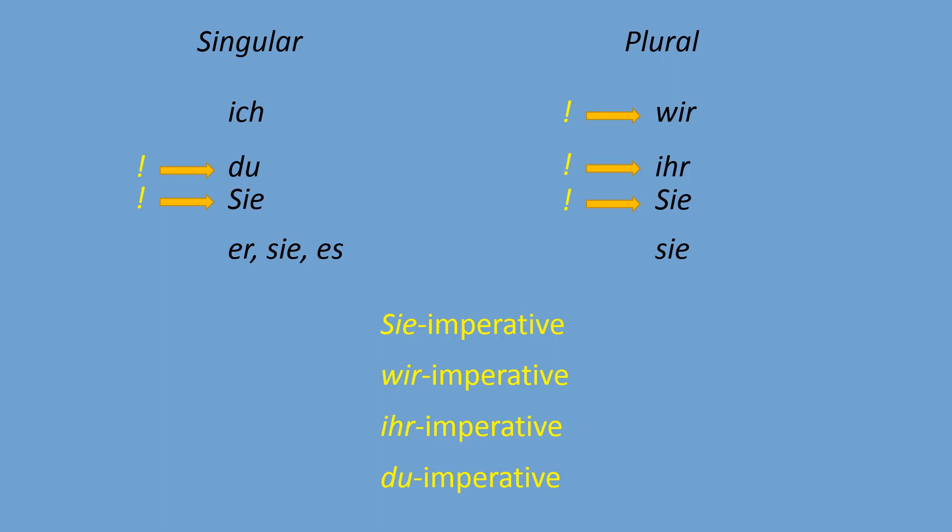What about third person singular and plural — 'er,' 'sie,' 'es,' or 'they'? If you're talking about your best friend Michael using 'he,' as soon as you turn to Michael and give him a command, you switch to the du-imperative. Similarly, if you turn to a group you were describing as 'they,' you'll use the ihr- or Sie-imperative. So it's impossible to give commands in the third person — we always use du, ihr, or Sie.